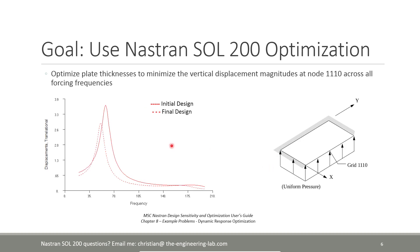At the beginning each thickness is constant, but after the optimization all the thicknesses are varied and you can see a tapering effect throughout the plate. As a result, we actually minimize the displacement response across the forcing frequencies — shown here with a solid red line for the original and a dotted line for the optimized response.